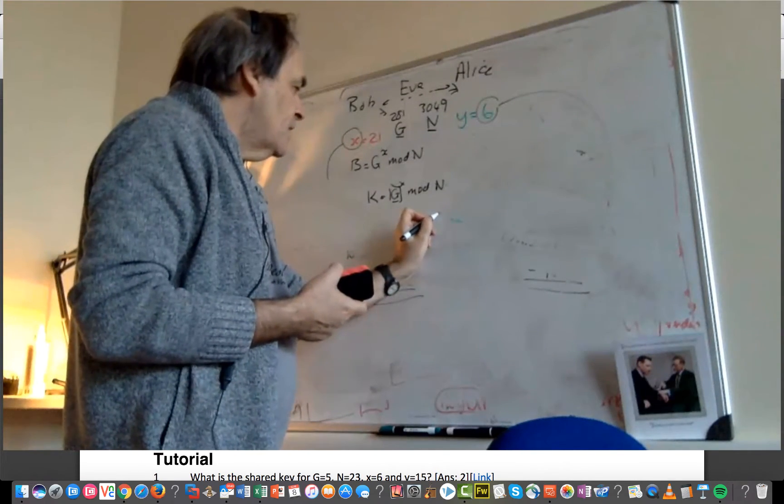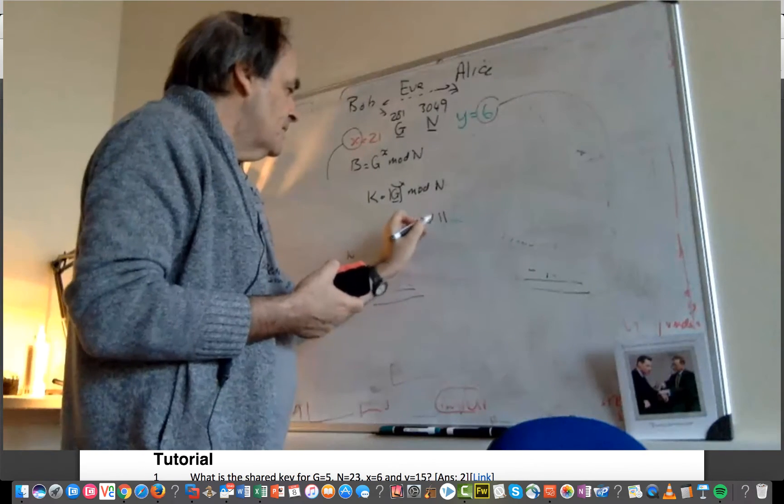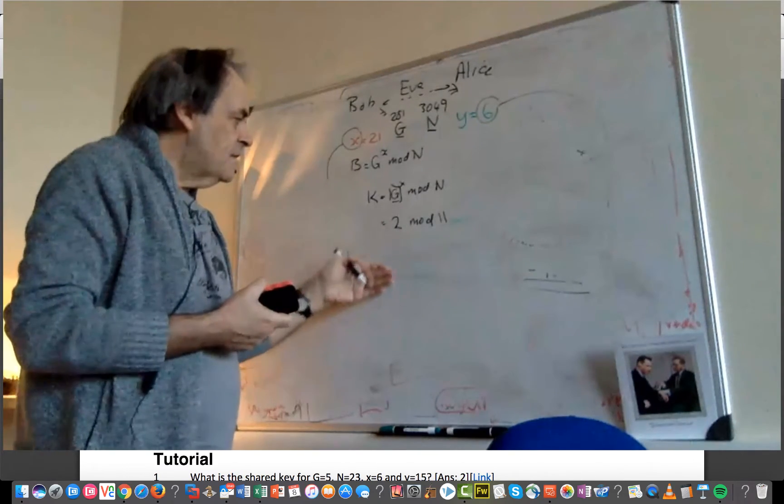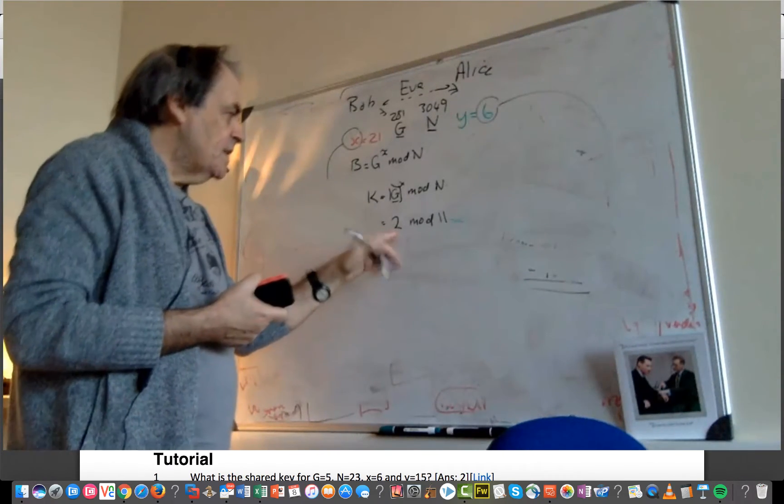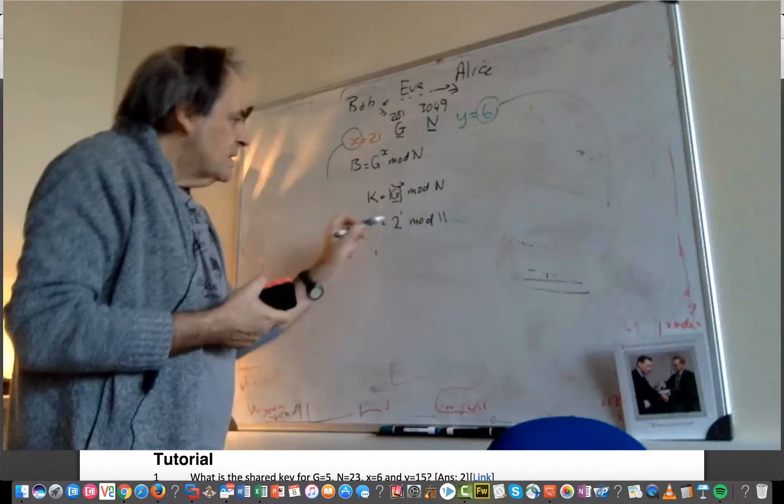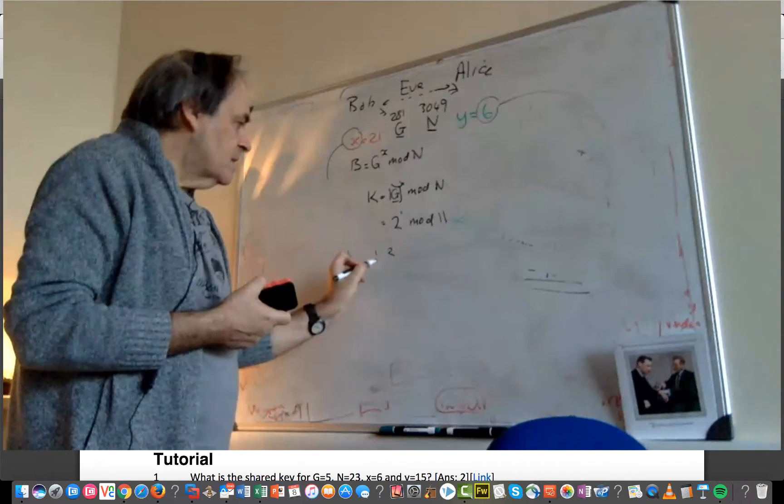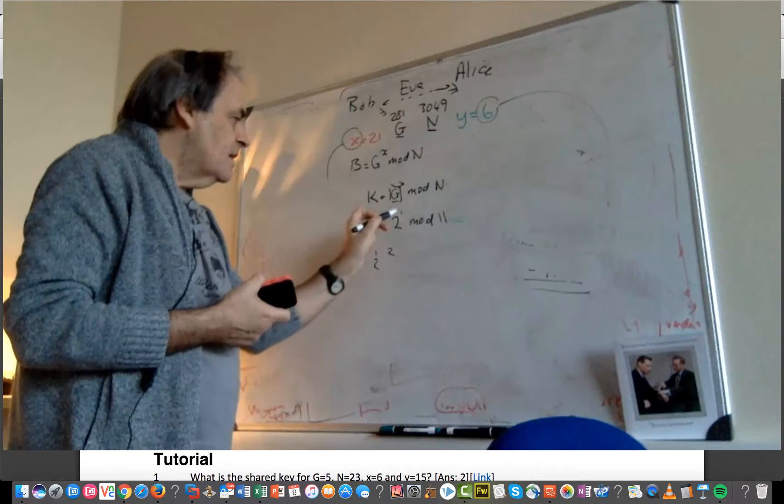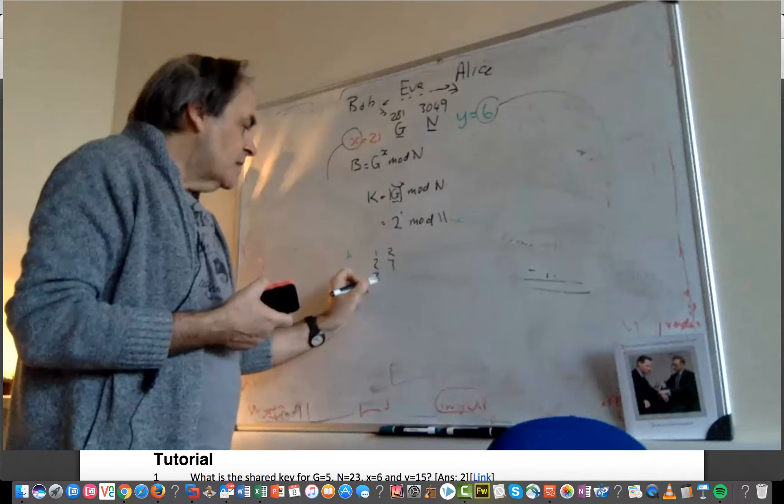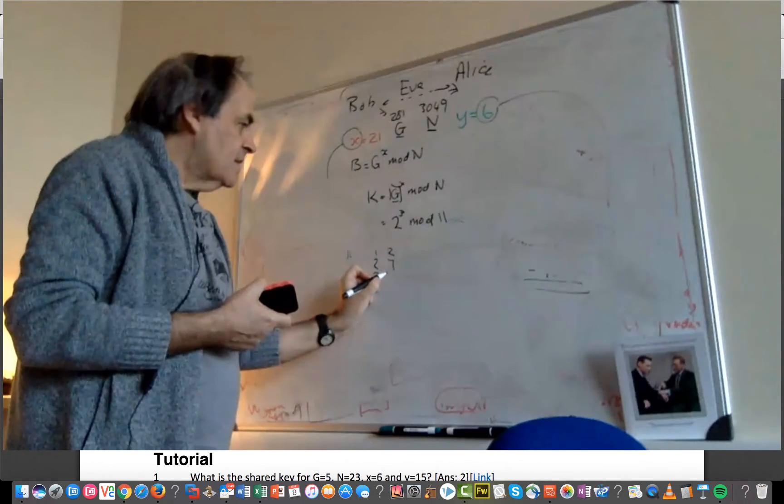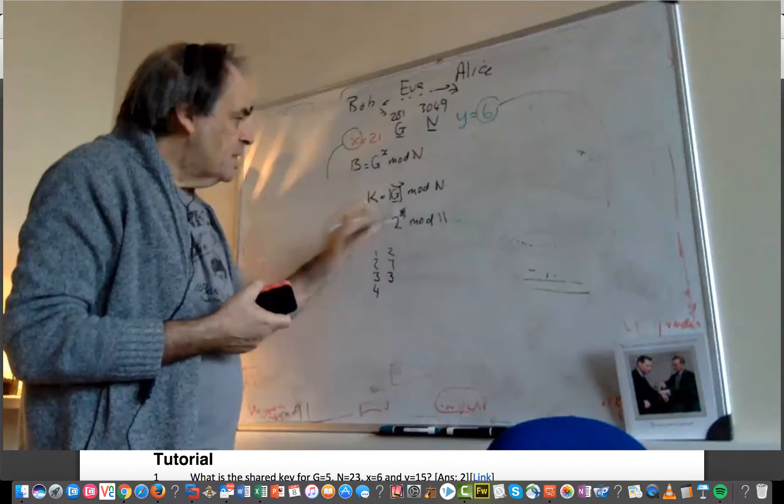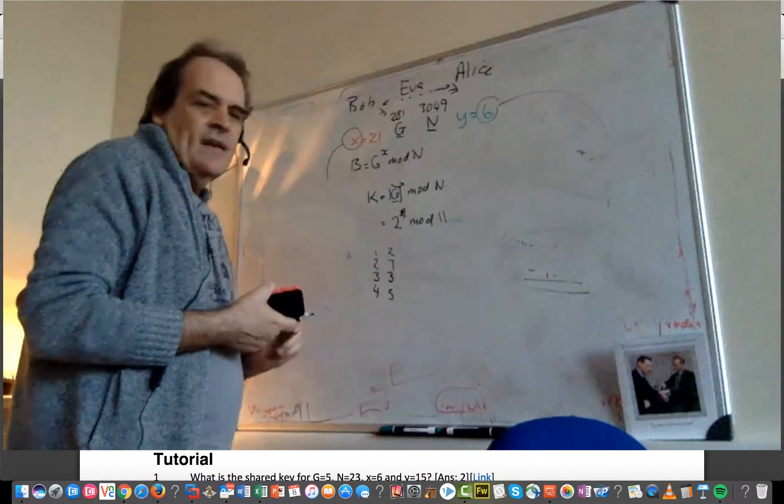So in another lecture, I explain how we can select G to make sure that these values work. So if we had, say, a value of mod 11, and if we selected a value of 2 for G, then if we try a value of 1, then we get 2. If we have a value of 2, then we get 4 mod 11, which is 7. If we try 3 for X, then that gives us 3.